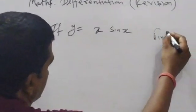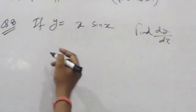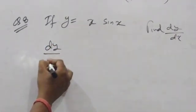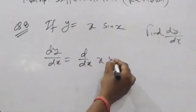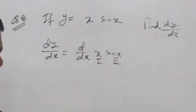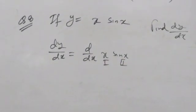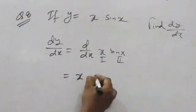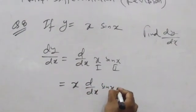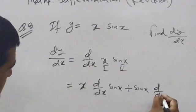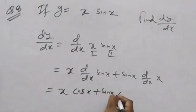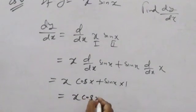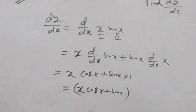If y = x·sin x, find dy/dx. Using the product rule: x is the first function, sin x is the second function. dy/dx = x·d/dx(sin x) + sin x·d/dx(x) = x·cos x + sin x·1 = x·cos x + sin x. This is the answer.